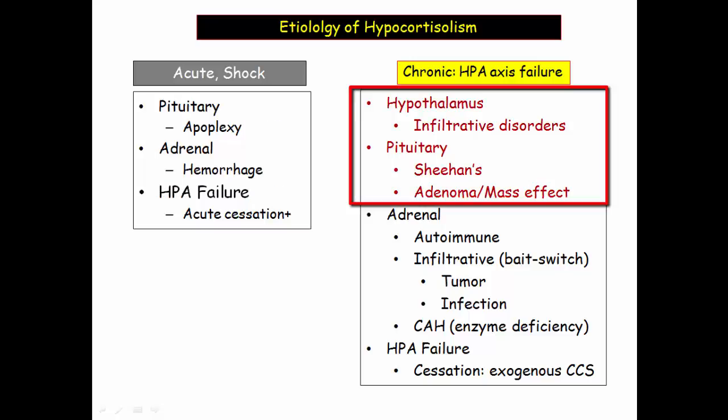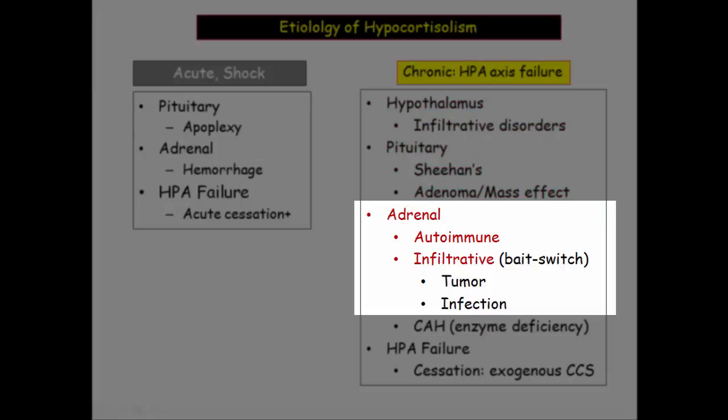As far as central causes are concerned, hypothalamic failure from entities such as craniopharyngioma, tuberculous infection, or granulomatous disease are fairly uncommon. You are much more likely to hear about pituitary failure in the form of ischemic pituitary injury from Sheehan syndrome, or pituitary failure from a mass. The most common masses produce prolactin or growth hormone, or produce nothing as in null cell tumors. The majority of vignettes will focus on primary adrenal gland failure, of which autoimmune glandular destruction will be the most common.